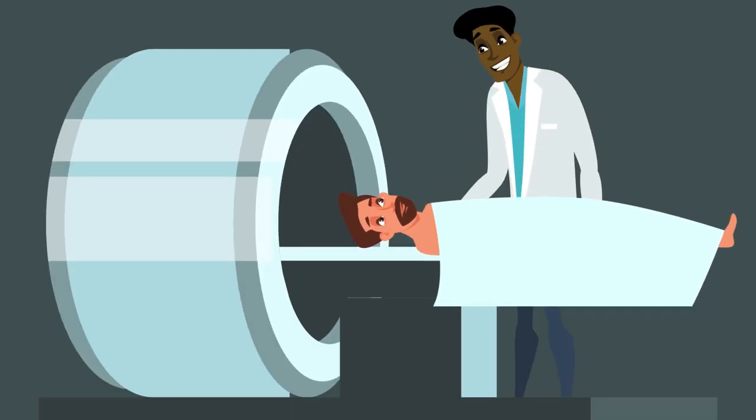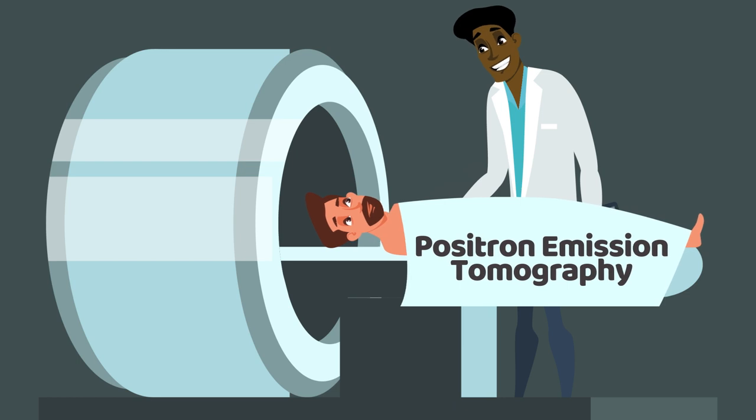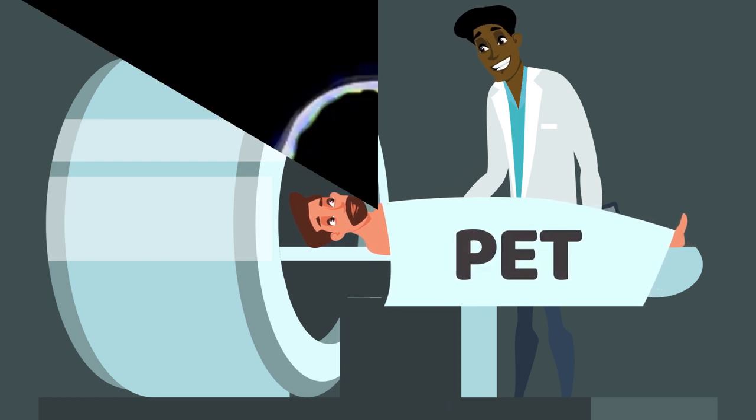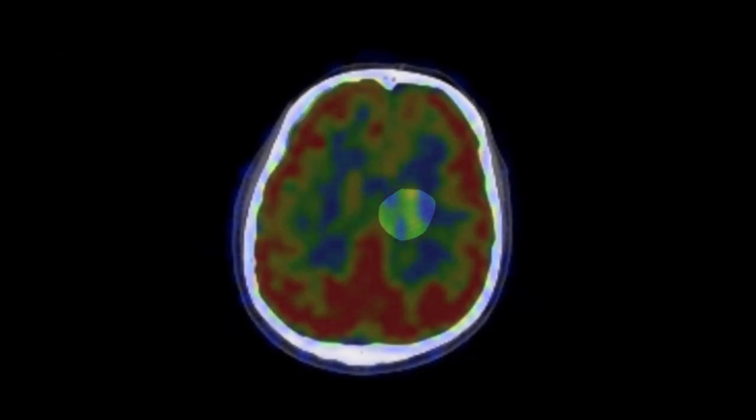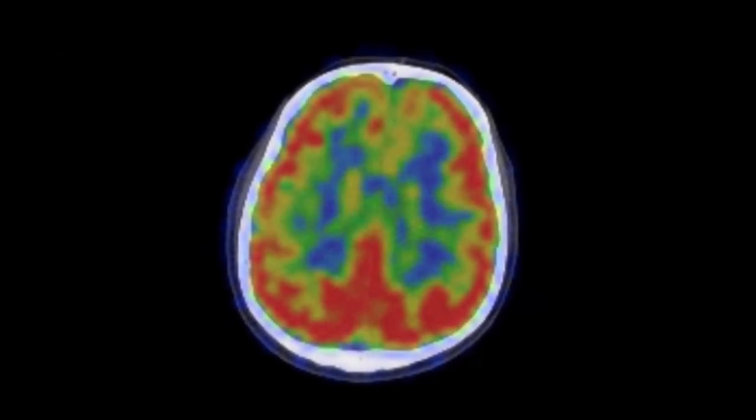Scientists know this because they can see brain activity on imaging scans called positron emission tomography or PET. This is what your brain might look like if only 10% of it were used, but this is how it actually appears in a PET scan.